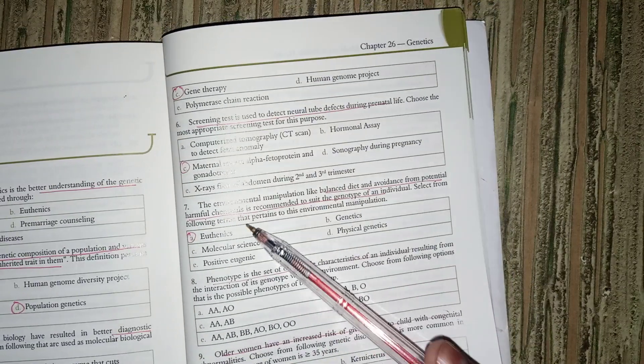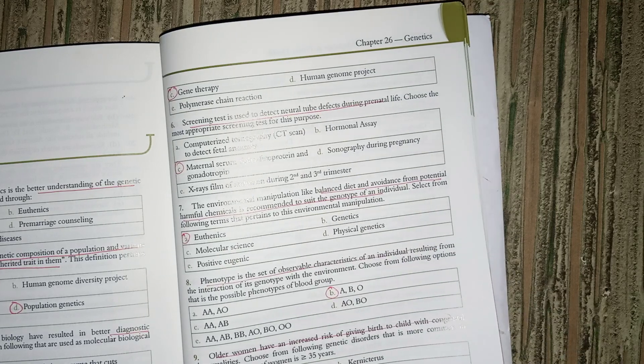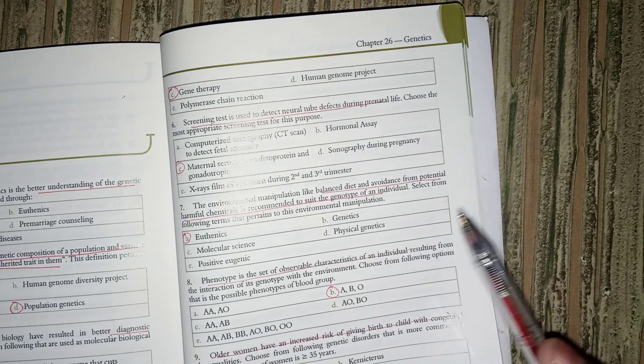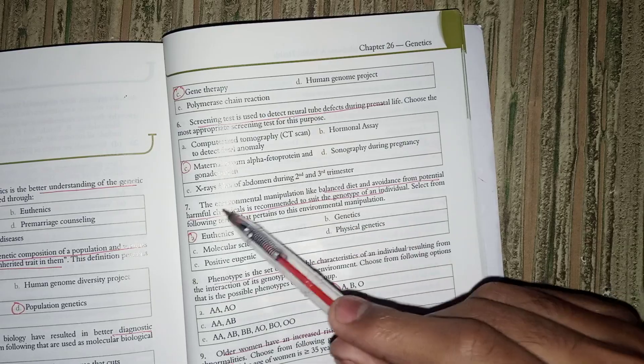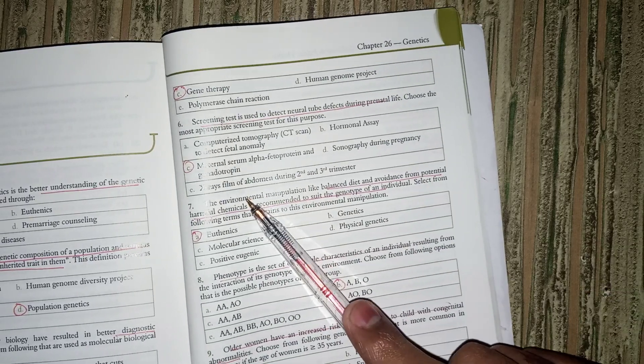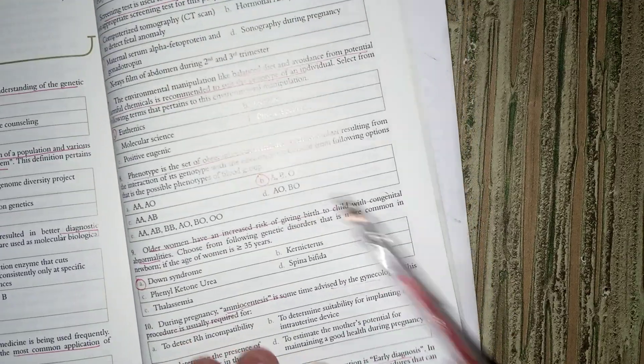Next, modifying the environment to suit the genotype is environmental manipulation, which we call euthenics. This means adjusting the environment. Phenotype blood group is ABO.